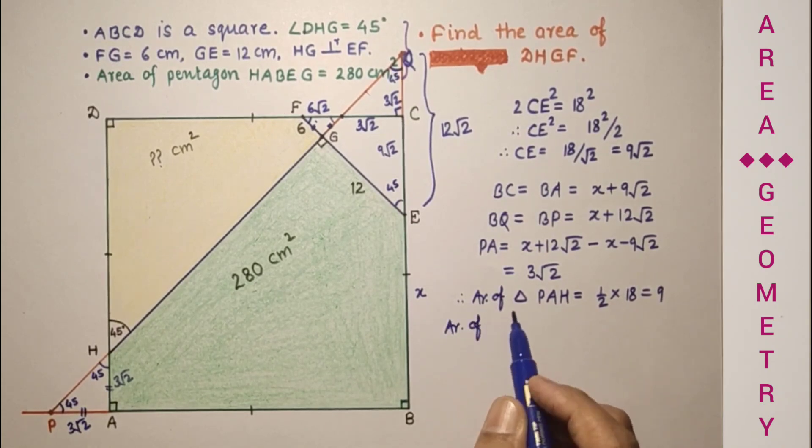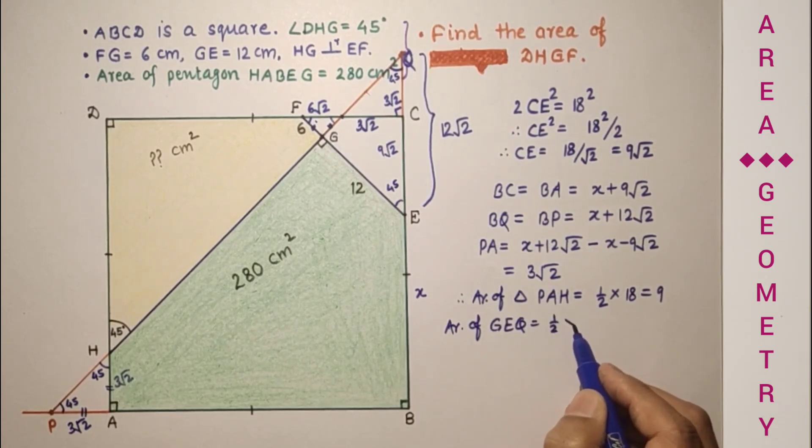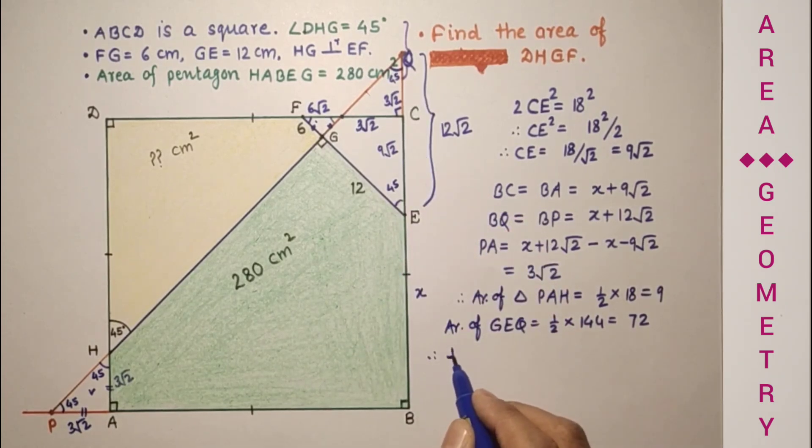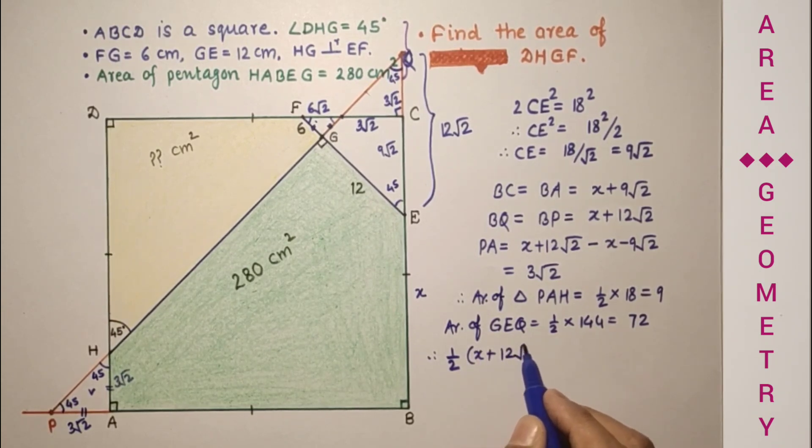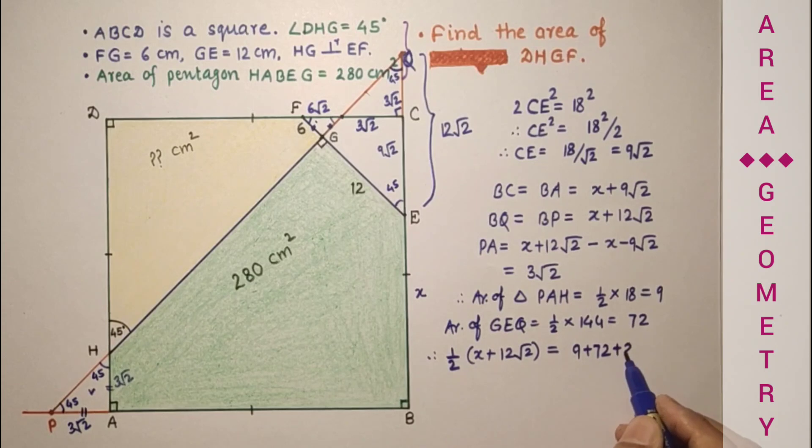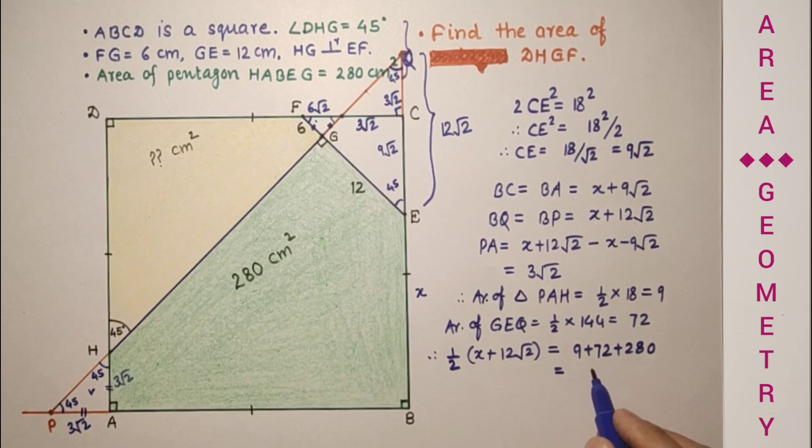Area of GEQ is half into 12 into 12, which is 72. So this area plus 280 plus this area, which is the right triangle area, so half into X plus 12 root 2 whole square is equal to 9 plus 72 plus 280, that is equal to 361.